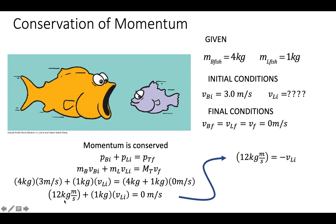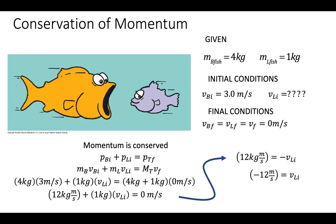Rearranging the equation: the initial momentum of the big fish is four times three, which is 12 kilogram-meters per second. The little fish contributes one times its velocity. Since the right side equals zero, we move the 12 to the other side, giving us a velocity of negative 12 meters per second. The negative sign tells us the little fish is traveling to the left, which is expected since they have opposite velocities. The question asks for speed, which is the magnitude, so the answer is 12 meters per second.